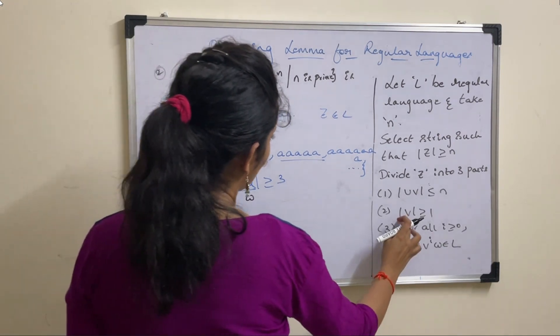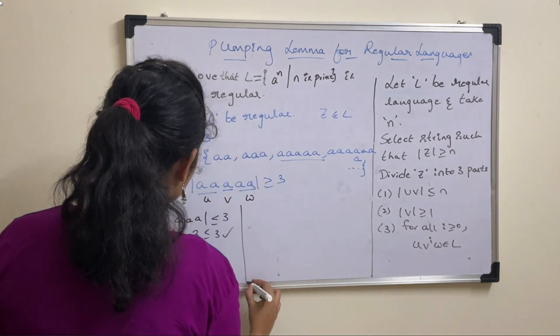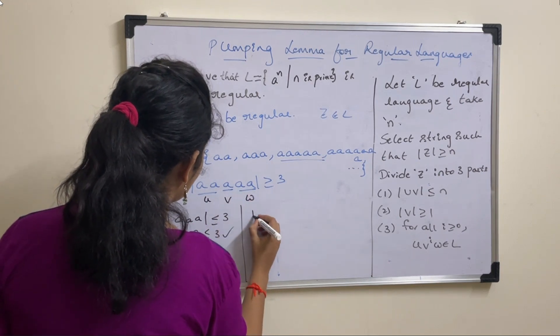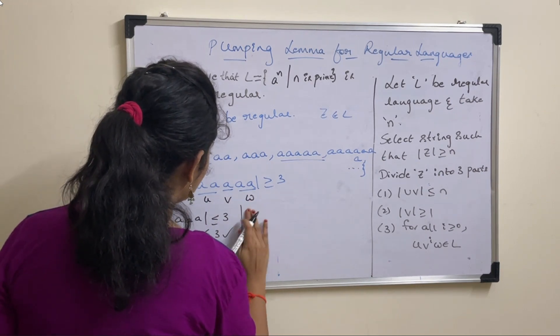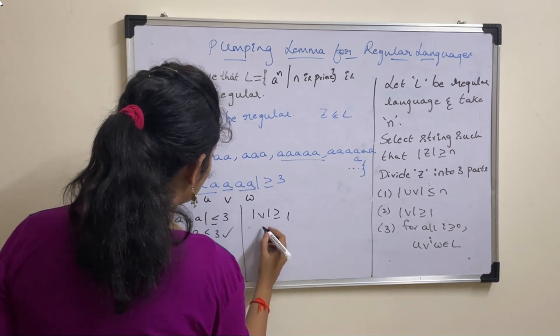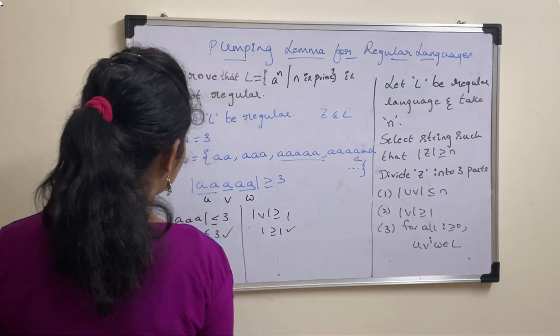Next, mod V greater than or equal to 1. Mod V means only 1. 1 greater than or equal to 1. So 1 is greater than or equal to 1, true.